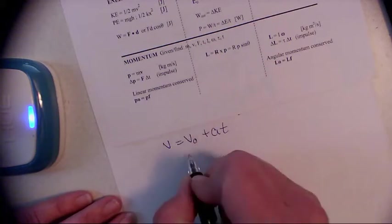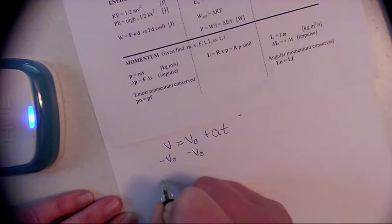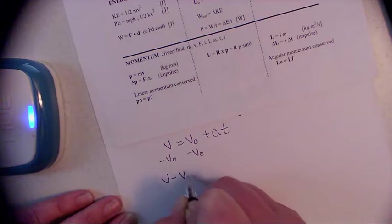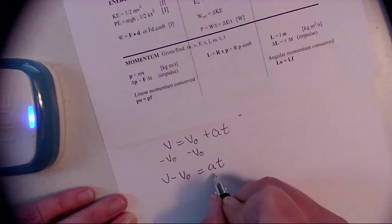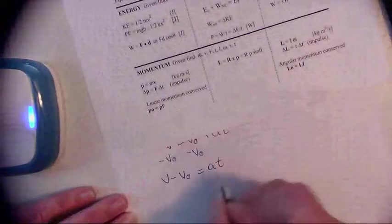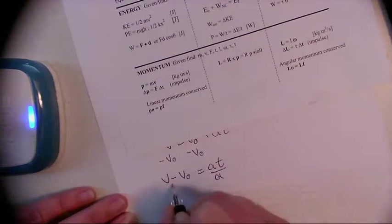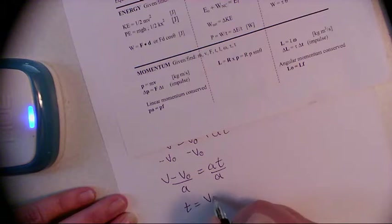All right, subtract v naught both sides. v minus v naught equals at. Now I've forgotten what I said I wanted to solve for. I'll do the opposite, so I'll solve for t. Divide by a, divided by a, and t equals v minus v naught divided by a.